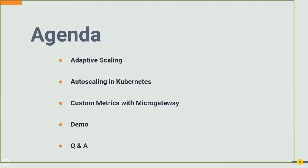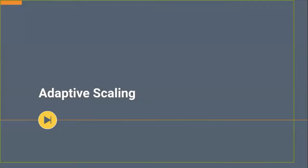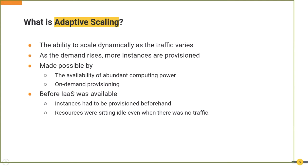We'll also talk about how different deployment options help you scale in different ways. Finally we'll move into the demo section where we will walk you through different steps of scaling the micro gateways. So what is adaptive scaling? We can simply say adaptive scaling is the ability to dynamically scale as the traffic varies.